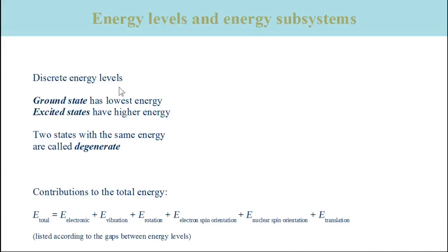The state of lowest energy is named the ground state. All other states have higher energy and are called excited states. Sometimes two states have the same energy; then they are called degenerate.